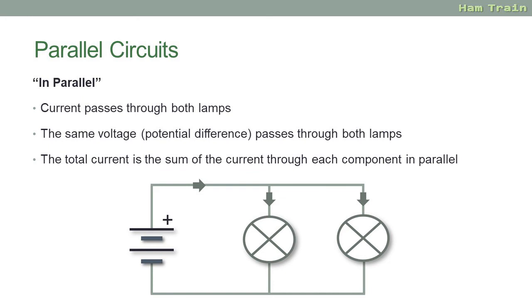So let's recap on parallel circuits. The current passes through both lamps. The voltage is the same, so a 3 volt battery, 3 volts through the first lamp, 3 volts through the second lamp. And the total current is the total of the current through each component.